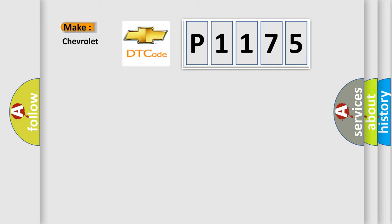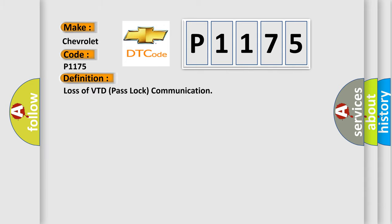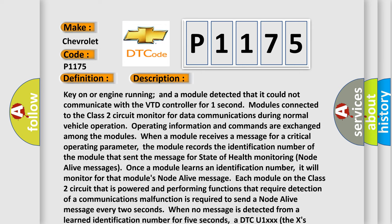So, what does the diagnostic trouble code P1175 interpret specifically for Chevrolet car manufacturers? The basic definition is loss of VTD PassLock communication. The DTC is set when the key is on or the engine is running and a module detects that it could not communicate with the VTD controller for one second. Modules connected to the Class 2 circuit monitor for data communications during normal vehicle operation. Operating information and commands are exchanged among the modules. When a module receives a message for a critical operating parameter, the module records the identification number of the module that sent the message for state of health monitoring node alive messages.